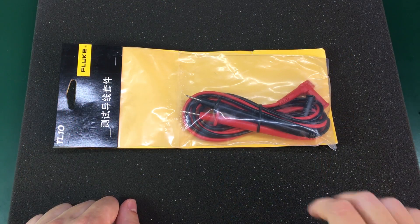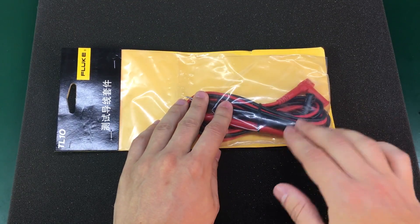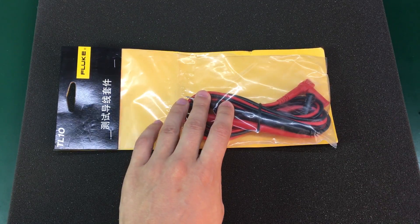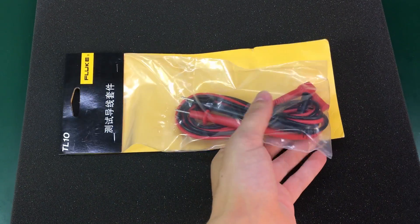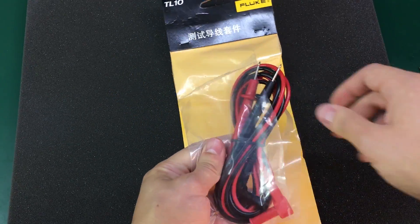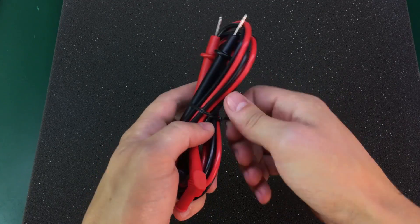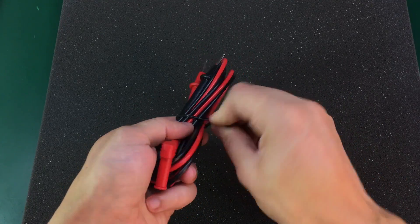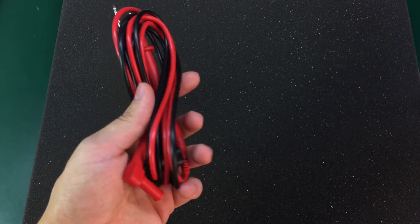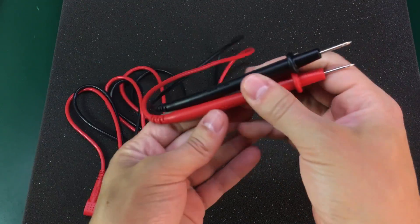So let's start with this pair of Fluke TL10 test leads. I got them from eBay for under $9, shipping included. Let's open this package and see how they feel and work.